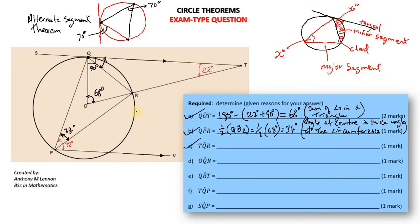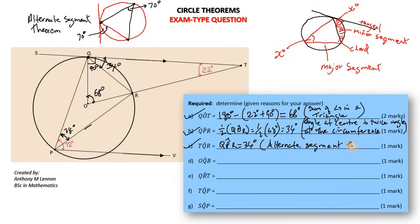So this angle here, between the tangent SQT and the chord QR, is equal to the angle standing on the endpoints of the chord in the alternate segment. This angle is 34 degrees, so this angle is also 34 degrees. Therefore angle TQR equals angle QPR, which equals 34 degrees. Reason: alternate segment theorem.